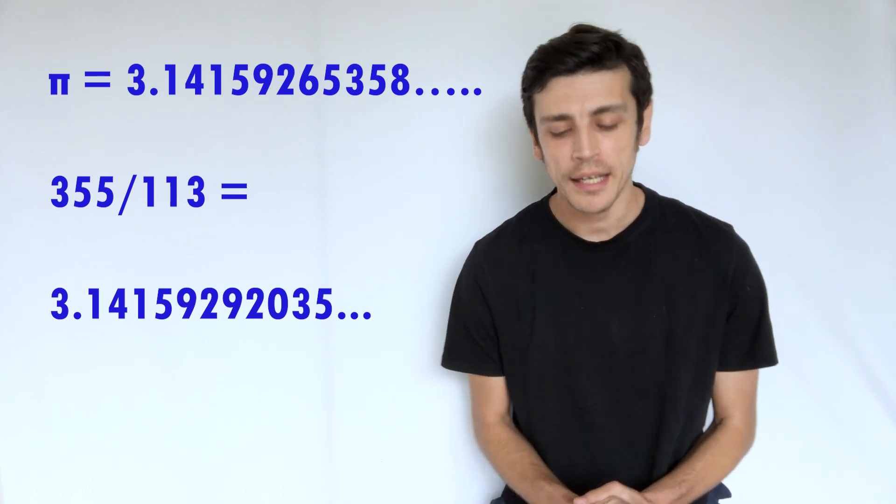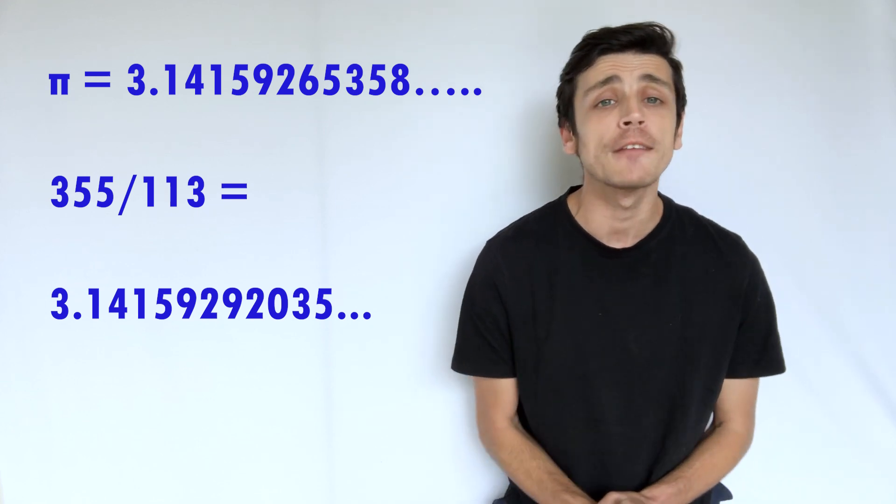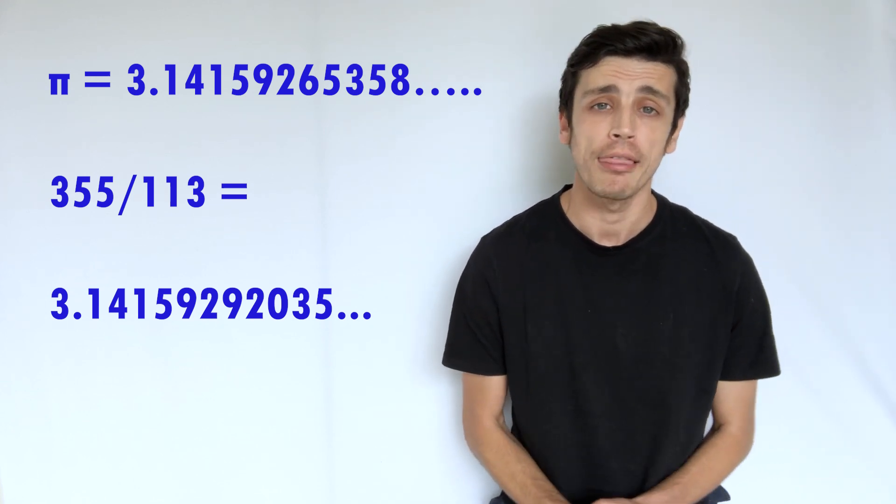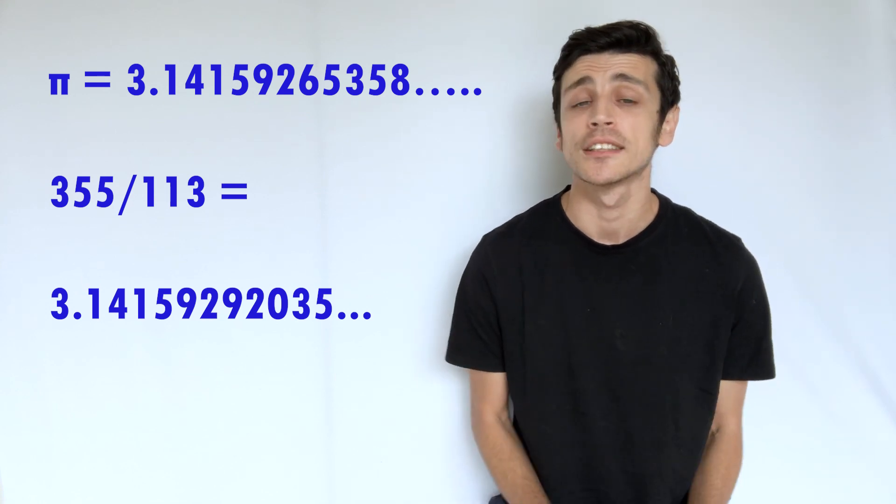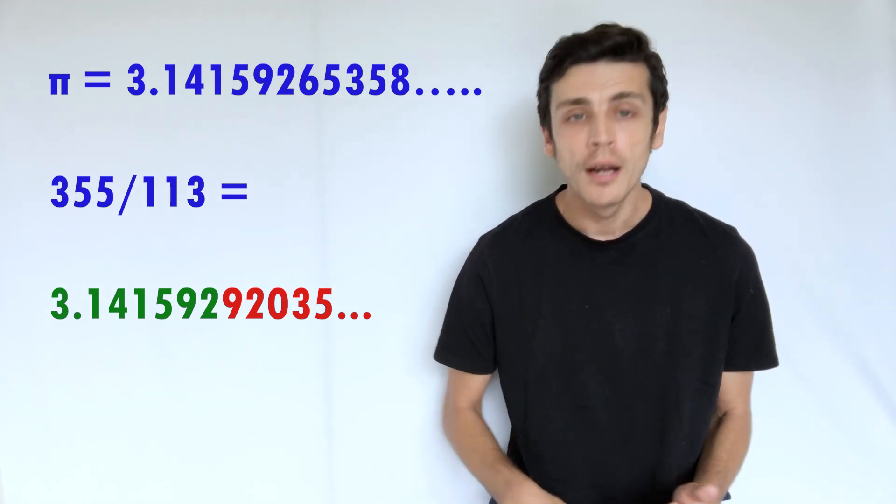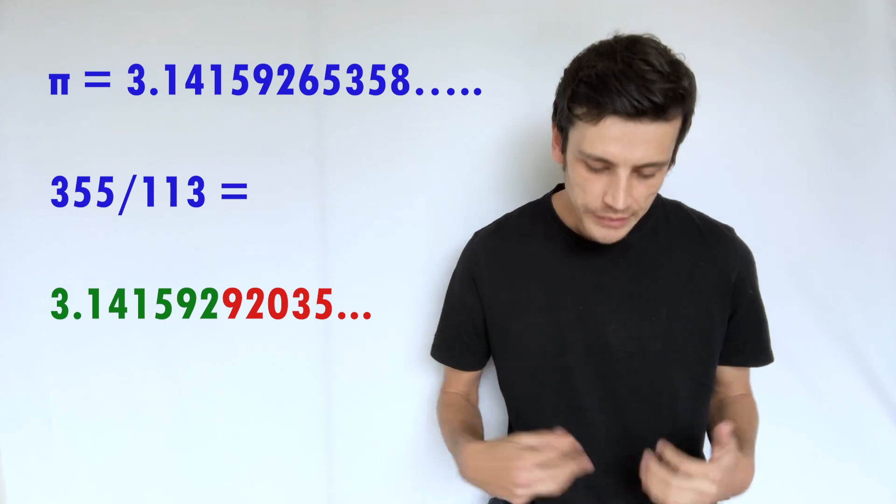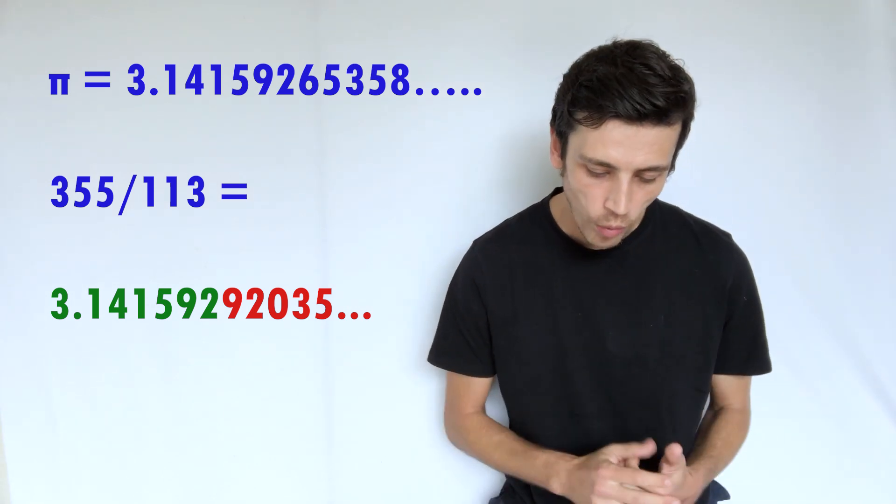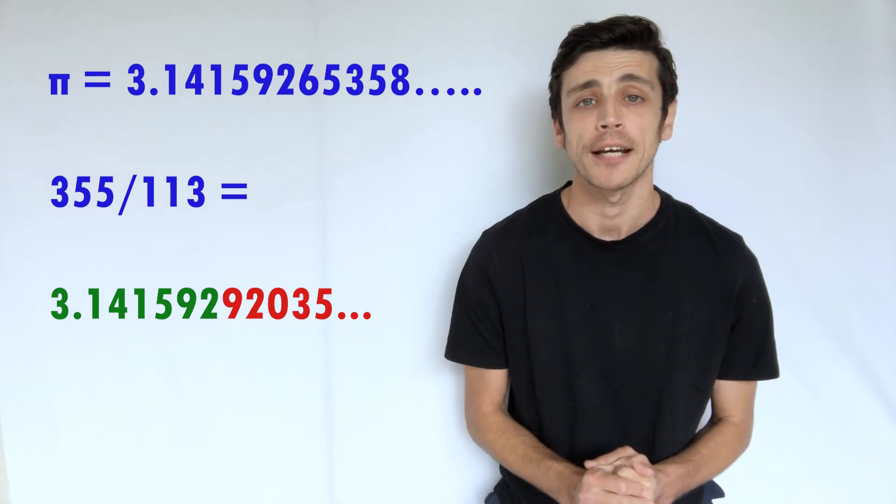There is also another one that is quite common, which is 355 divided by 113. And that actually gets us a lot closer. It does get us to six decimal places. So we get 3.141592, but then our next number is 9. So then we're not quite where we should be for the next number, and of course pi is the next six.